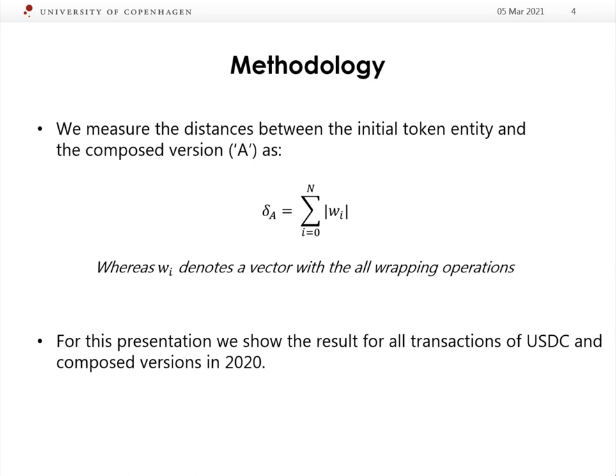The core idea of the paper is to measure the composability of assets as the distance between the initial token and the composed version, as a sum of all wrapping operations. To calculate the distance, one must find all composed assets of the initial token. Therefore we propose and apply an algorithm to find the derivatives of the initial asset.